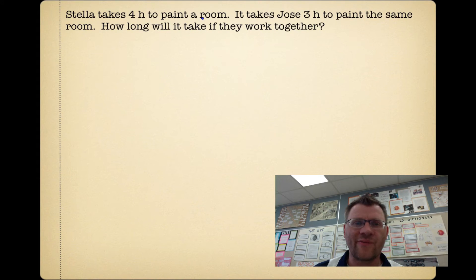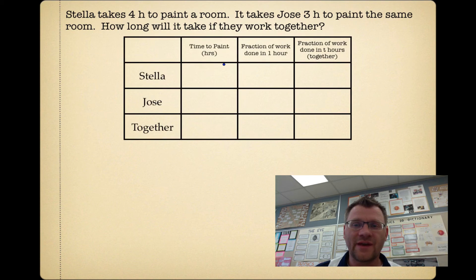So if Stella takes 4 hours to paint a room and it takes Jose 3 hours to paint the same room, how long will it take if they work together? For this sort of question, you might not know where to start, but always a good place to start is to make a table of values. We've got Stella, Jose, and together, with time to paint in hours, fraction of work done in 1 hour, and fraction of work done in t hours.